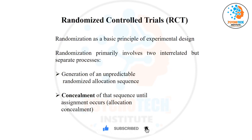So randomization involves both randomization and concealment. There are also other important terms used in randomized control trials that we'll focus on. RCT itself is a very big topic that would take two to three lectures, but we will try to capture the most important things here so that if a question comes from this area, you are able to solve it.